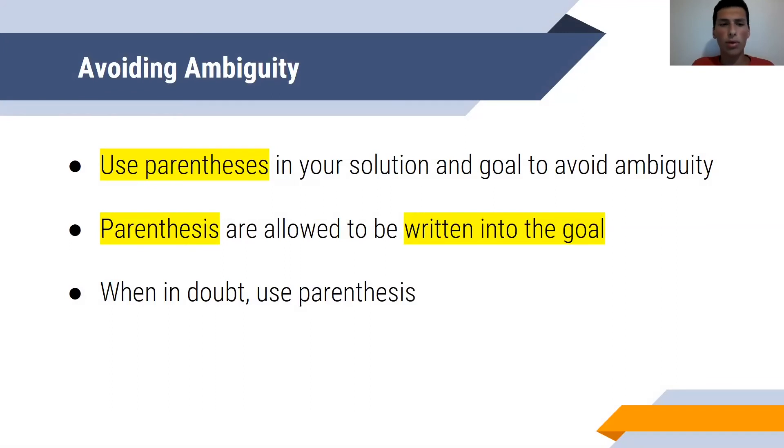So how do you avoid ambiguity? Well, all you need to do is just use parentheses in your solution and goal to avoid ambiguity. As long as you use parentheses, you can craft your solution in any way you want, and it's better to be safe than sorry and have somebody interpret your solution in a way that doesn't match the goal.